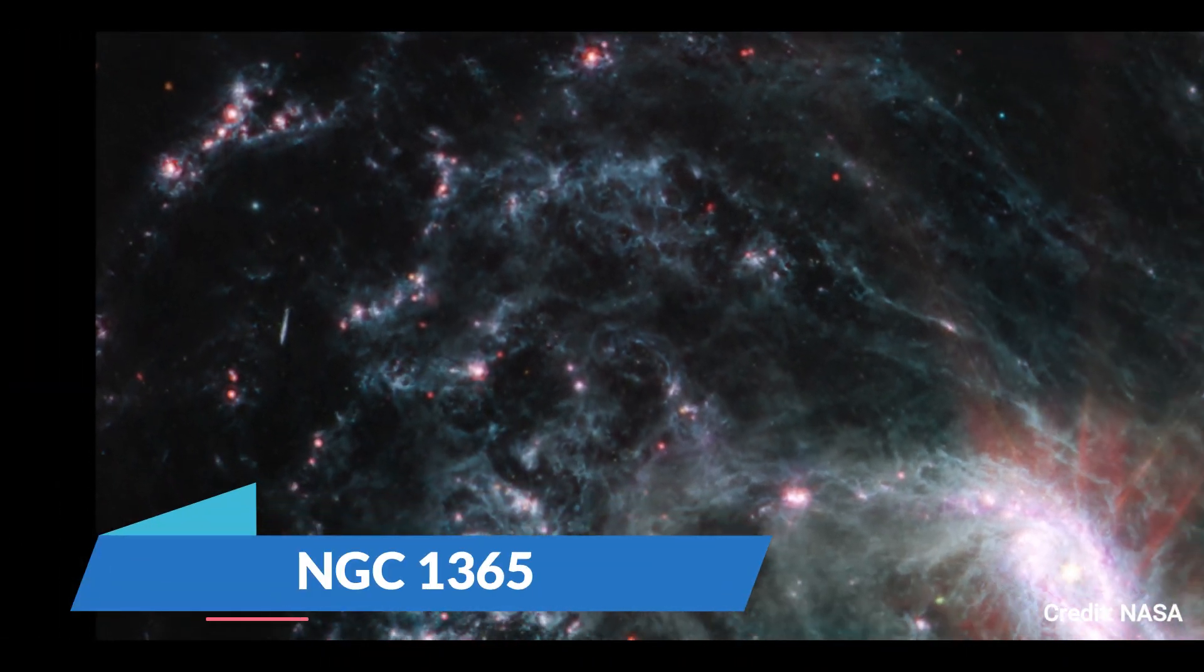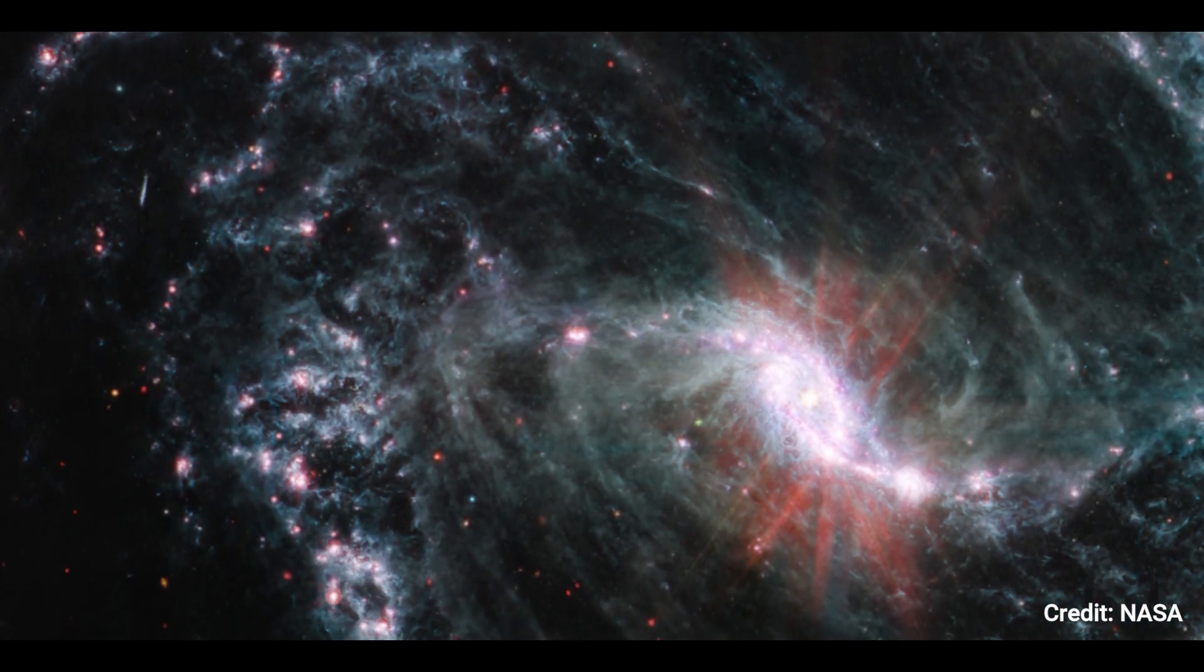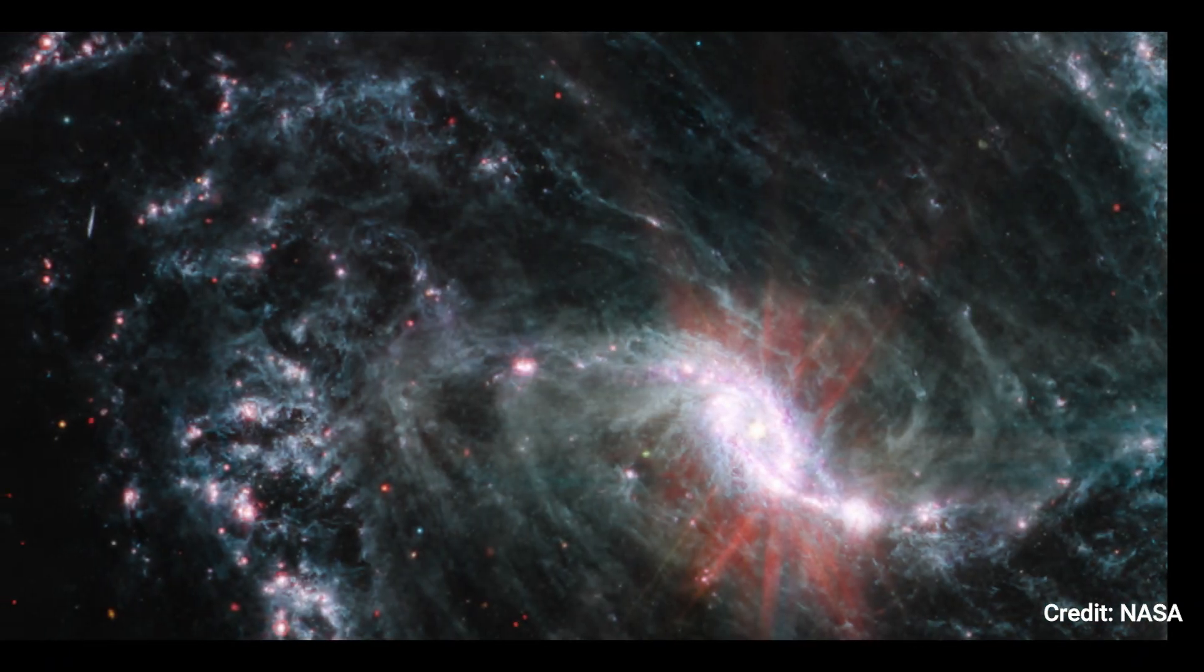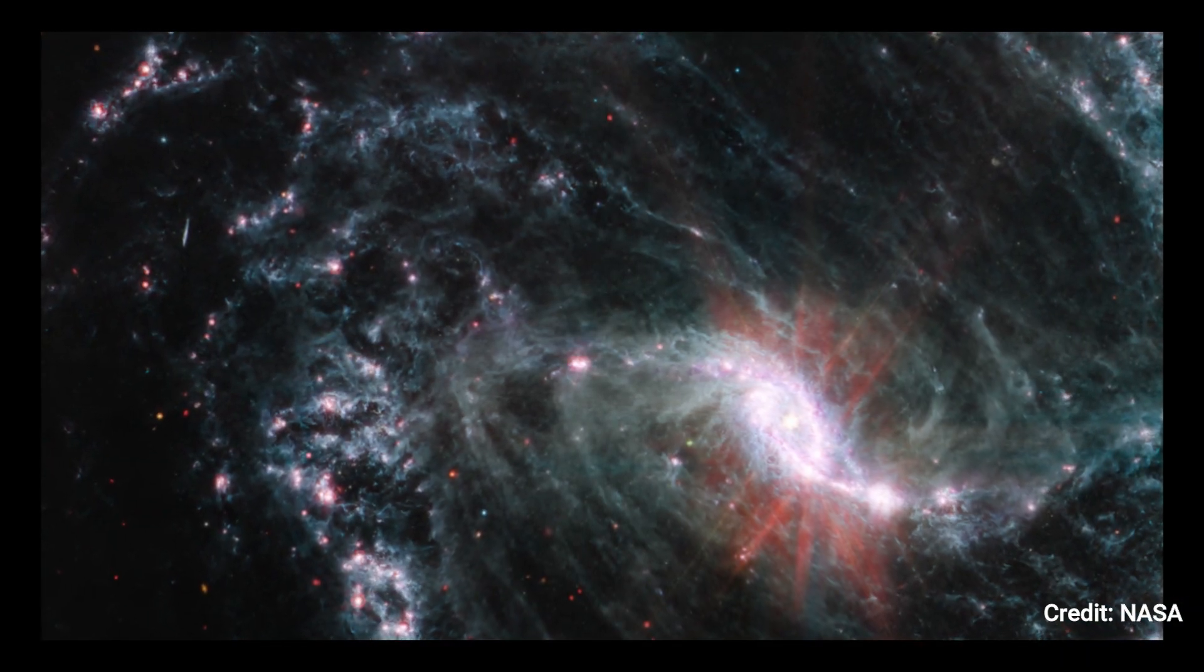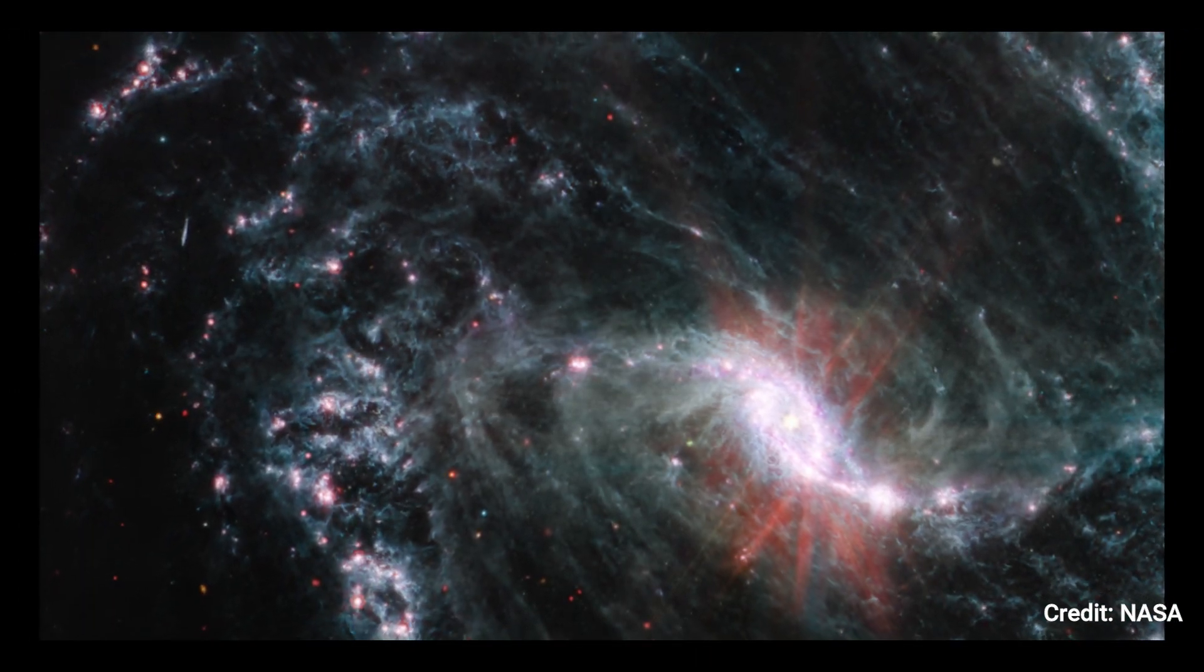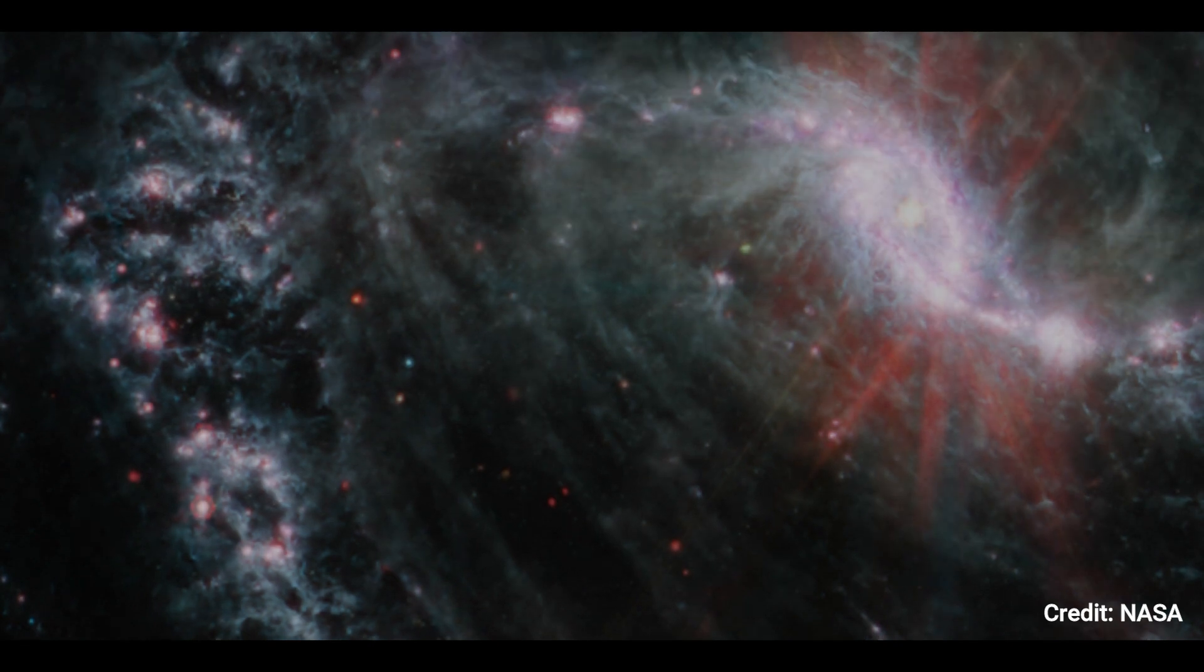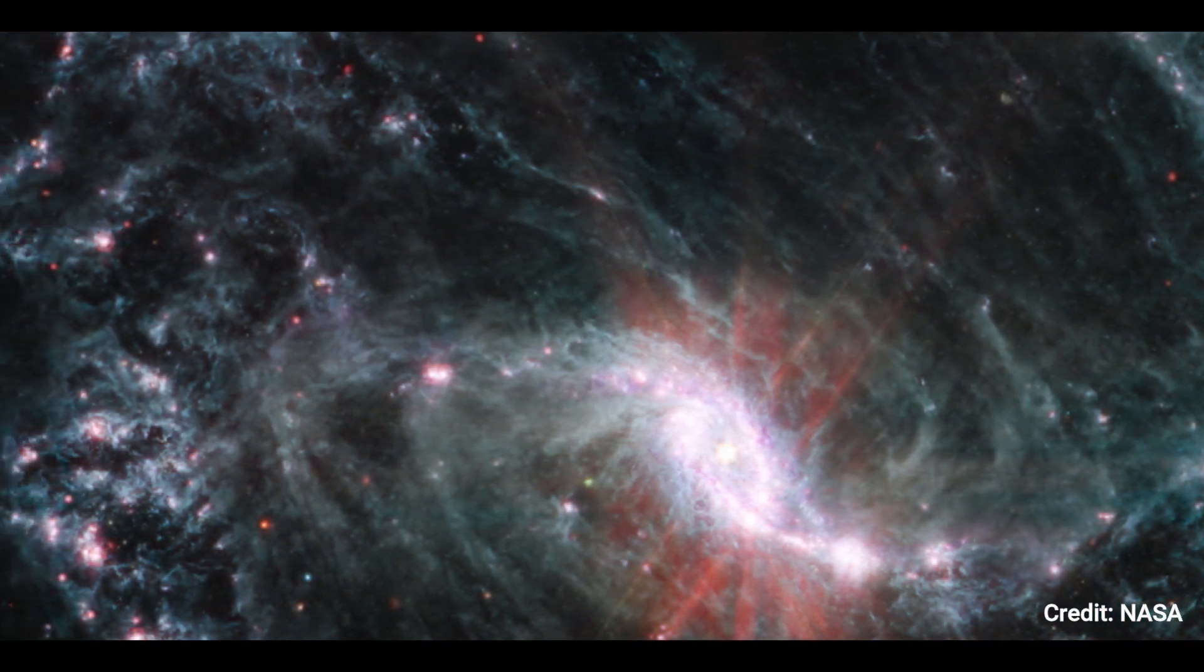Number 5: NGC 1365. Scientists are receiving their first look at how the creation of newborn stars affects the history of surrounding galaxies using NASA's James Webb Space Telescope's extraordinary resolution. NGC 1365, photographed with Webb's mid-infrared instrument MIRI, is one of 19 galaxies chosen for investigation by the physics at high angular resolution in nearby galaxies, PHANGS team. In the MIRI observations of NGC 1365, clumps of dust and gas in the interstellar medium absorbed light from forming stars and emitted it back out in the infrared.